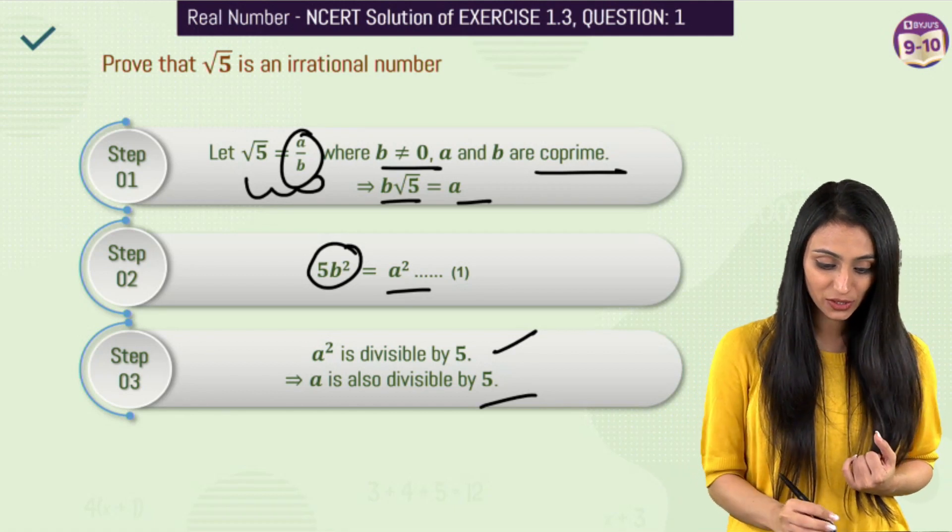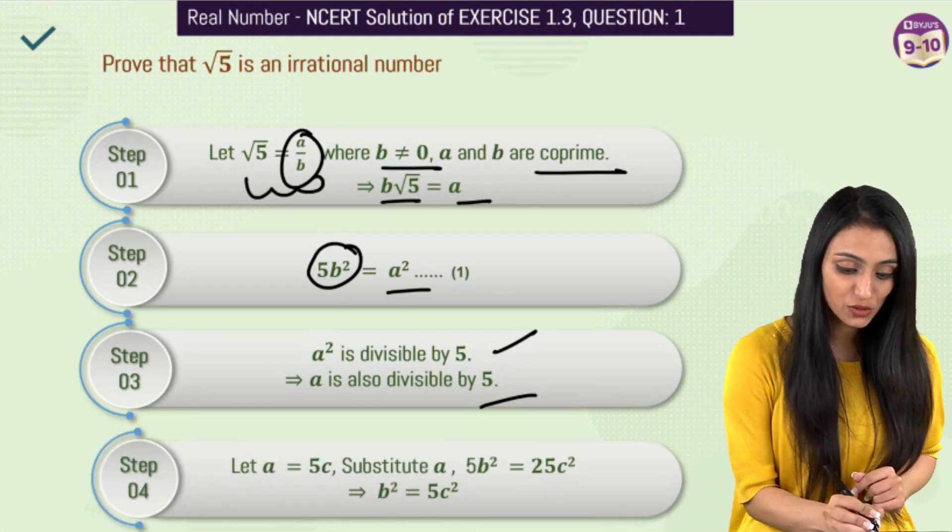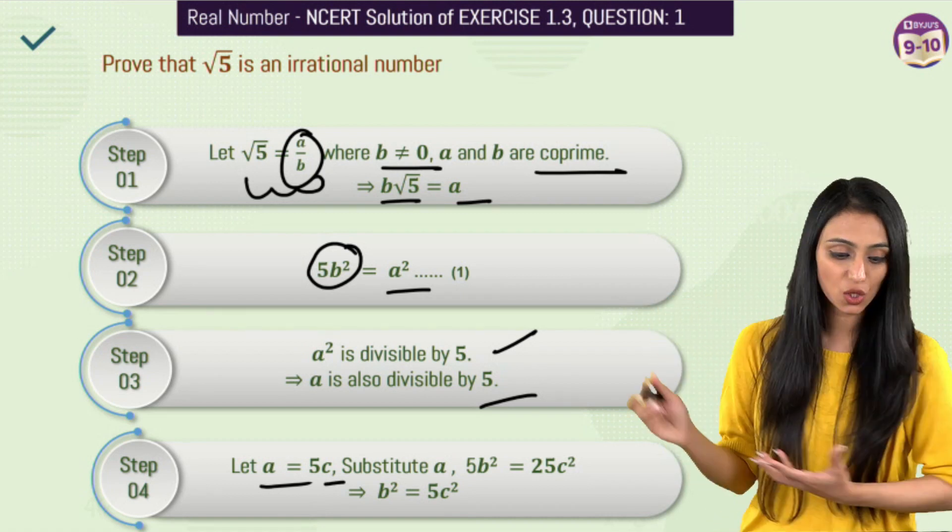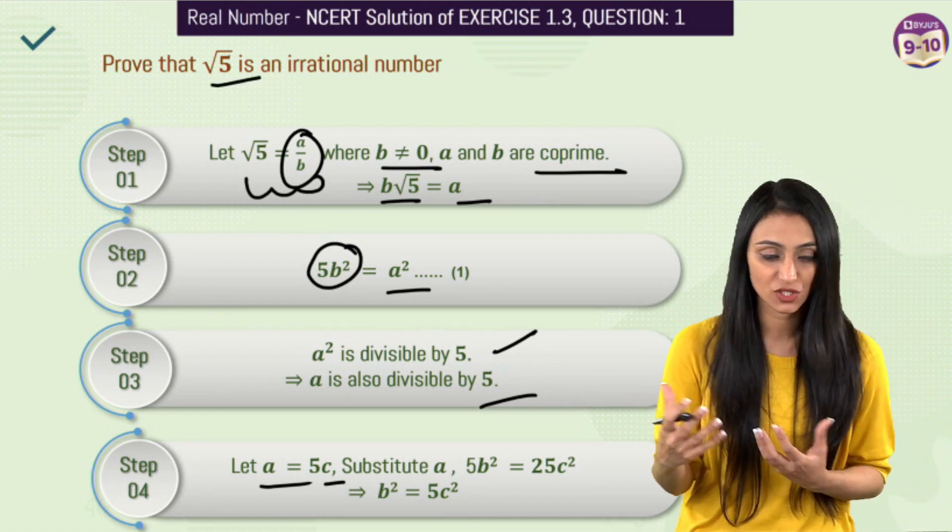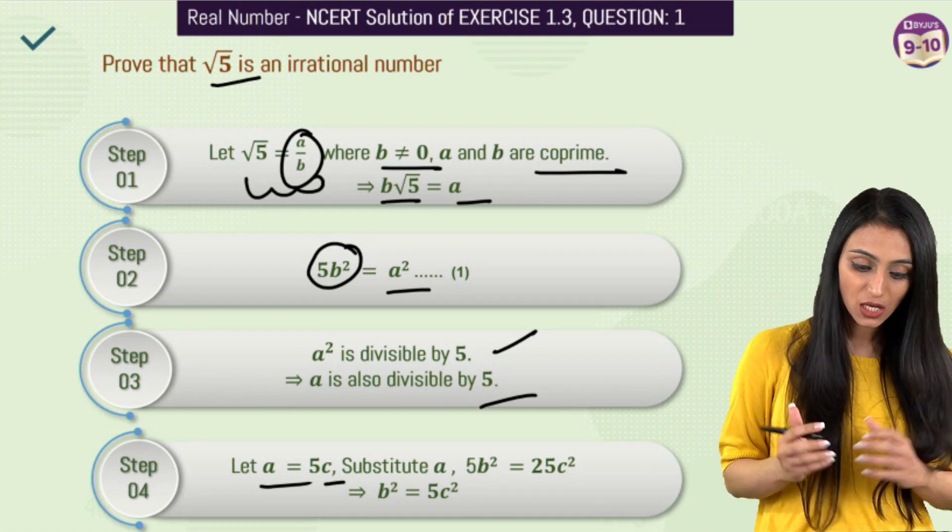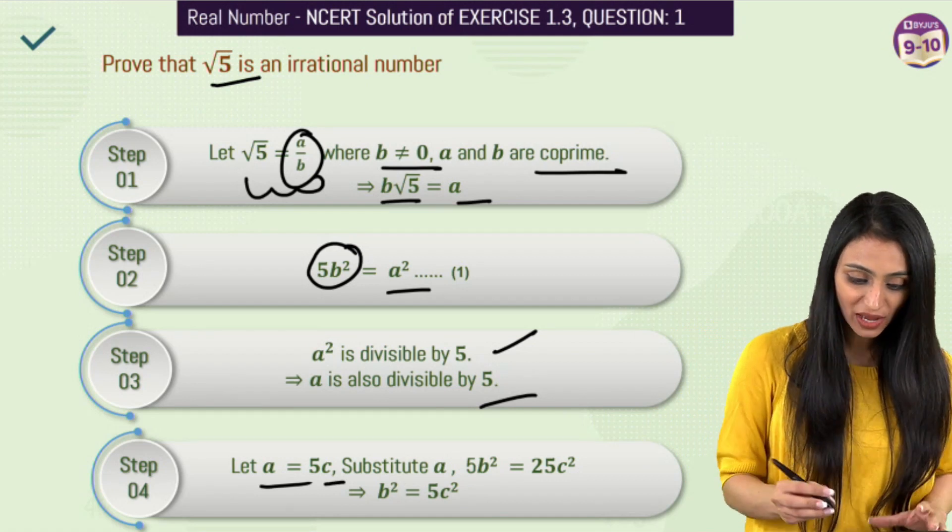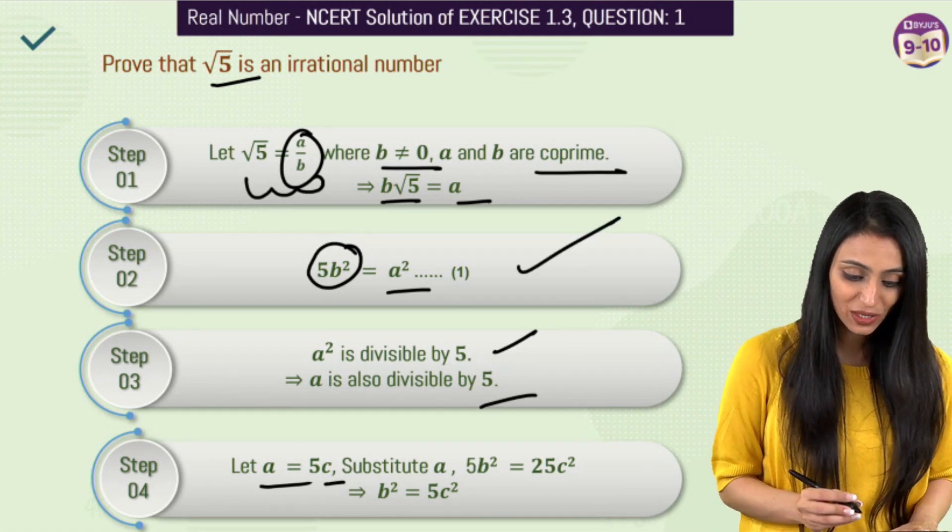Now let's suppose here that this a over here is equals to 5c. So we assume these numbers in such a way depending on what is given in the question. So let a be 5c. Now what we will do is, we will substitute this value over here in first equation. So what do we get here?